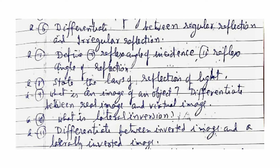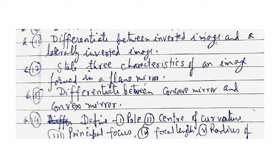State the two laws of reflection of light. What is an image of an object? Differentiate between real image and virtual image. What is lateral inversion? Differentiate between an inverted image and a laterally inverted image. State the three characteristics of an image formed in a plane mirror. Differentiate between concave mirror and convex mirror.